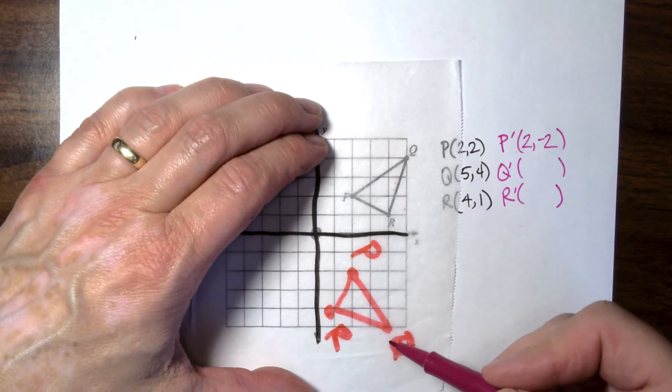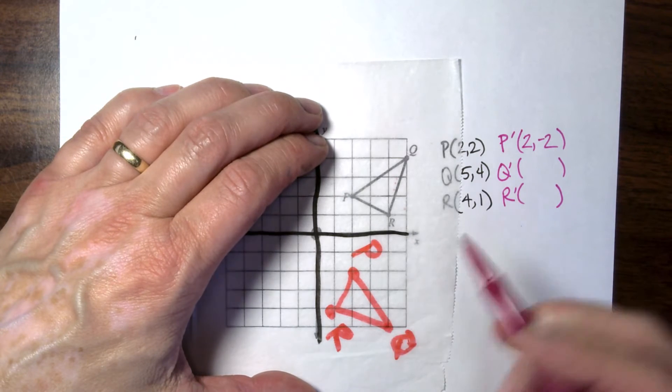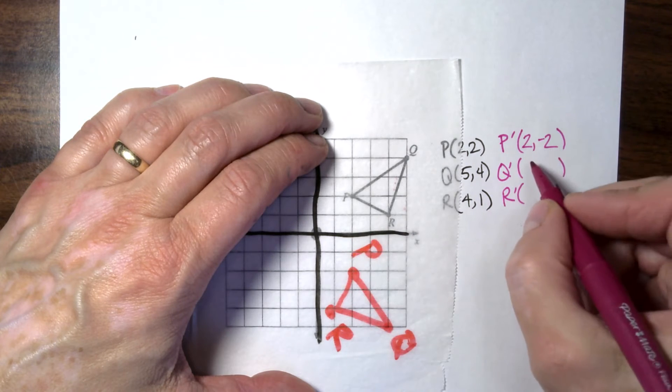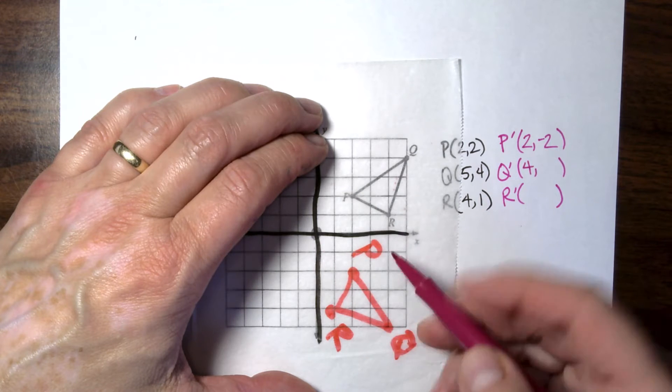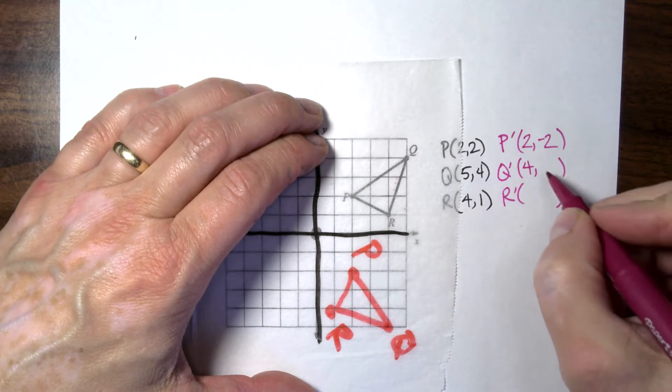And that is now at, x is still positive 2, and y is negative 2. Q ended up down here, and that is at x equals 5 and y equals negative 5.